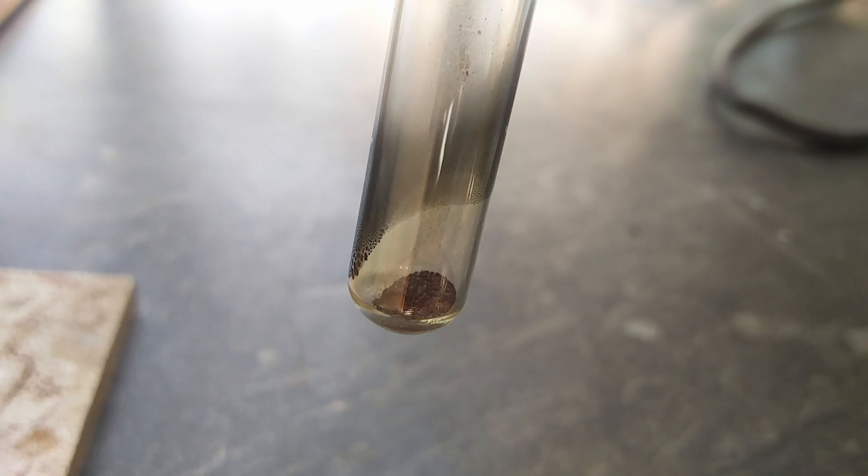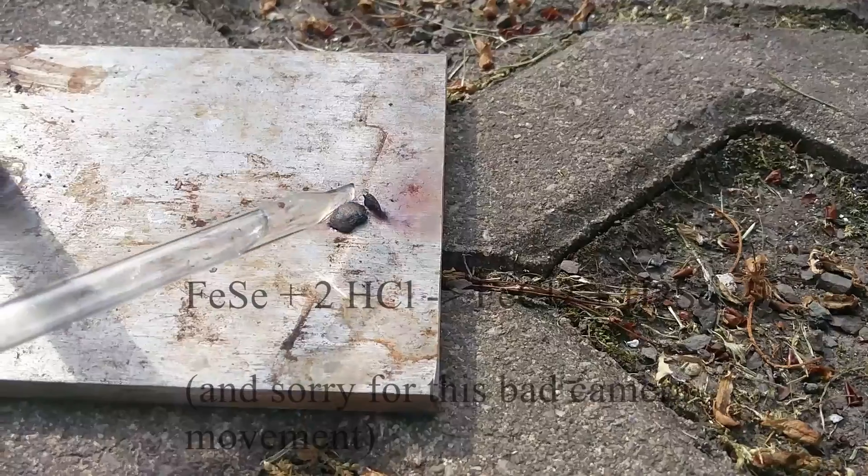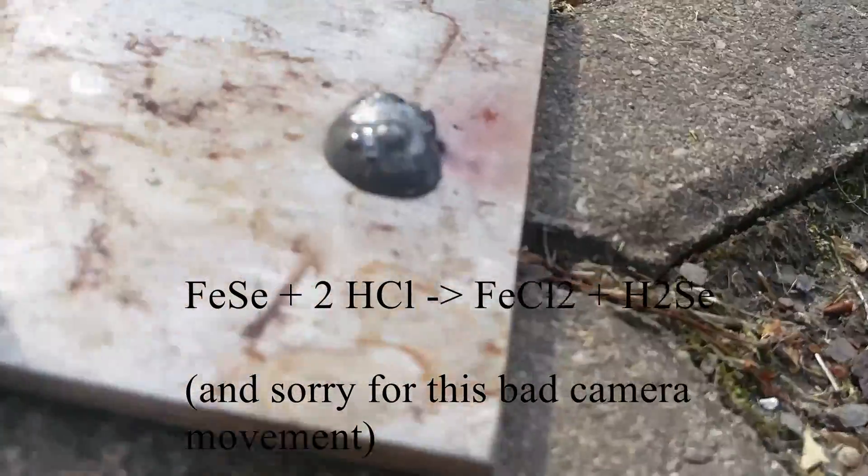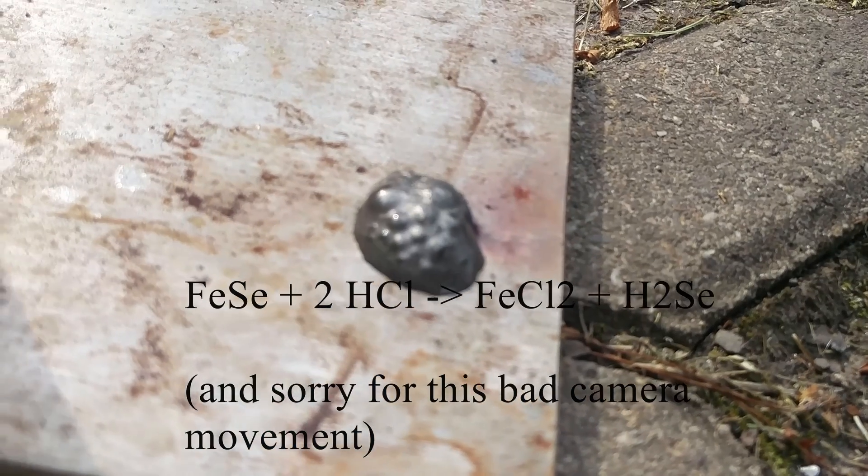In contact with acid, hydrogen selenide is formed, which is highly toxic and smells like horseradish, it's the most toxic selenium compound. Hmm, nice smell.